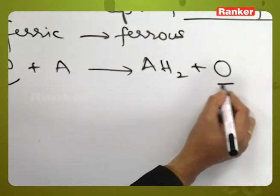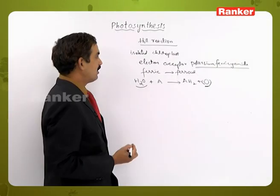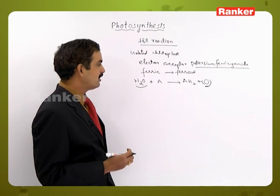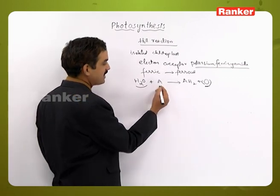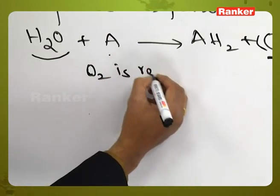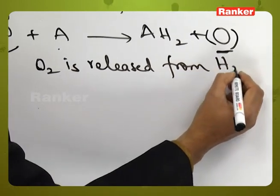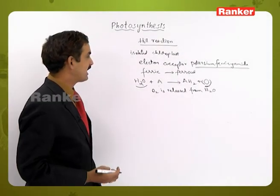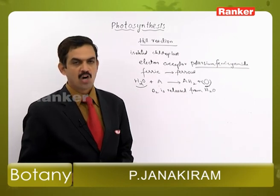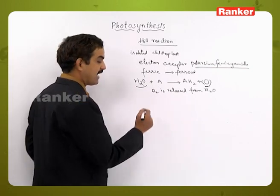Oxygen is released and the Hill reagent or Hill oxidant undergoes reduction. This is the Hill oxidant used in this process. It shows that oxygen is released from the water molecule. This is the Hill reaction, demonstrated by Robert Hill, to show that oxygen is released from water, not from the carbon dioxide molecule.